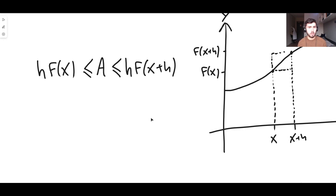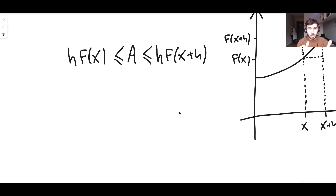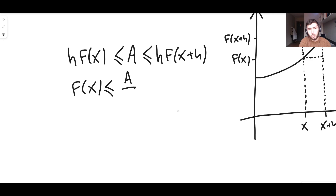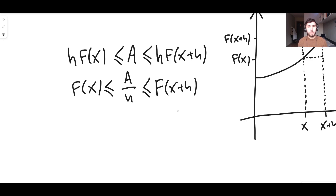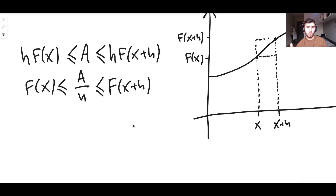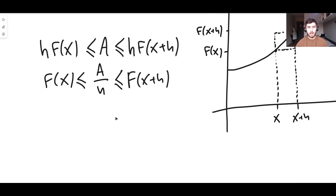Now we're going to divide everything by h. What we get is: f of x must be less than or equal to A over h, which must be less than or equal to f of x plus h. We don't need to worry about the inequality sign changing because we're going to define h as definitely being a positive number — it will not be negative. H is clearly to the right of x on the graph, so it must be bigger than zero, and not equal to zero either. So that equation works.